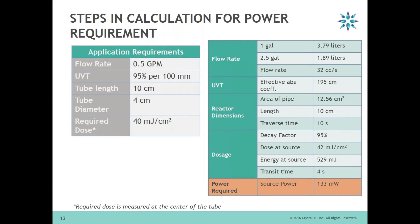There are much more complex steps for doing these power requirement calculations. When a customer typically talks to us, we would ask: what is the flow rate, the UV transmittance, the tube length, the tube diameter, and of course the required dosage? We would then do our calculations and come up with the power required. In this case, we are talking about 133 milliwatts per LED.